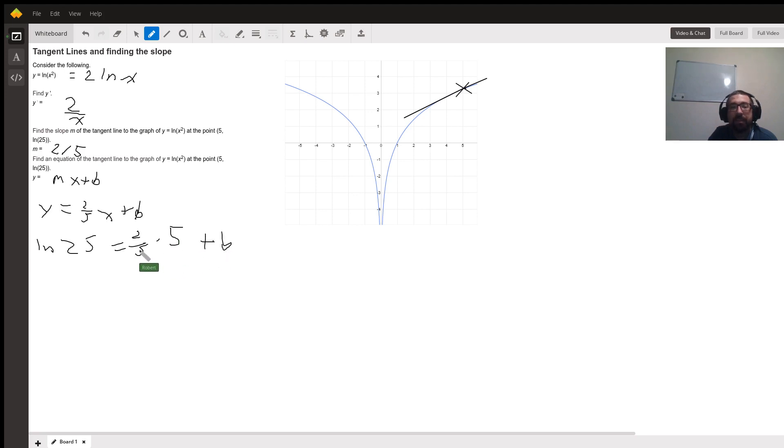Well, this is nice. The 5 and the 5 divide out. So we're left with b would be, we'd subtract from both sides here. I lost something, that was b. b equals ln 25 minus 2.